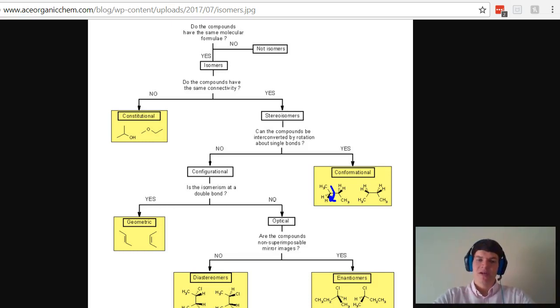If we answer no to isomerism at a double bond, we know we're dealing with optical isomers. And we need to ask ourselves now, are the compounds non-superimposable mirror images? If so, they're enantiomers. If they are non-superimposable non-mirror images, we're dealing with diastereomers.